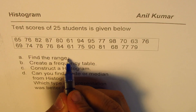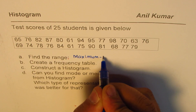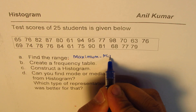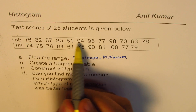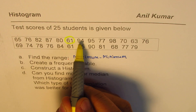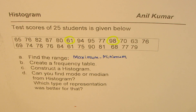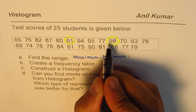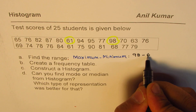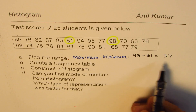Let's begin with finding the range of this data. Range is maximum minus minimum — it gives you the spread of the data. Looking carefully at the data, 61 seems to be the lowest mark and 98 seems to be the highest. So range = 98 minus 61 = 37.